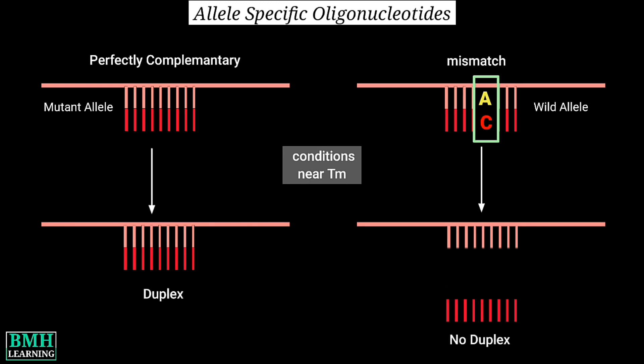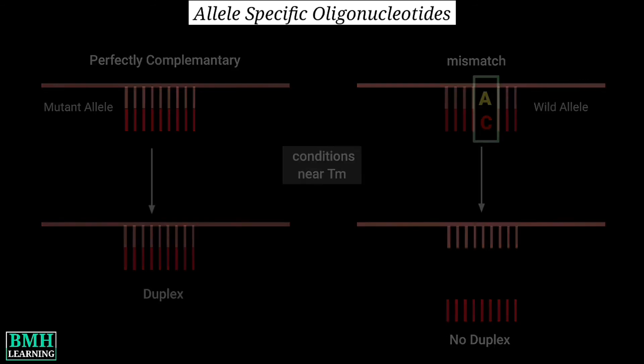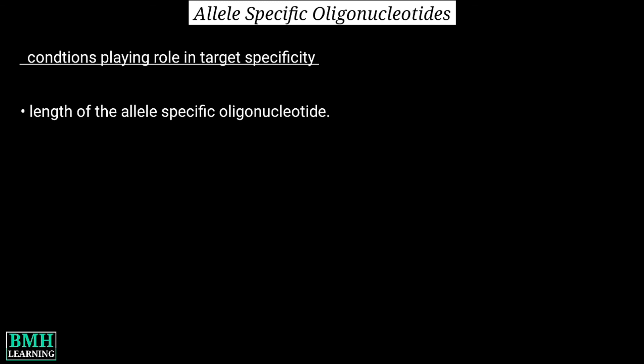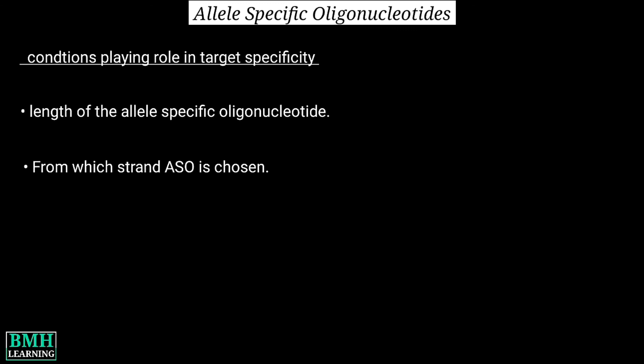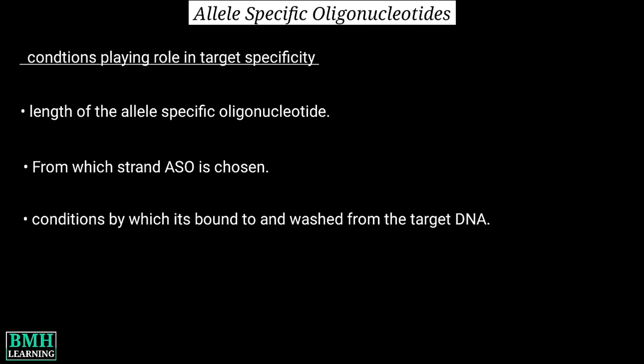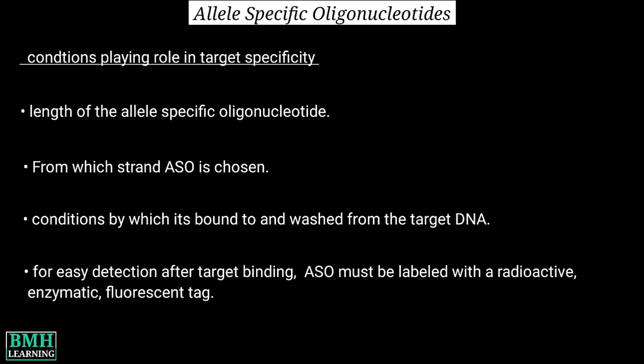The ASO is then visualized — for example, radioactive ASOs can be detected by exposing an x-ray film to the blot. There are other important conditions that play a great role in target specificity: these are the length of the allele specific oligonucleotide, from which strand the ASO is chosen, and the conditions by which it binds to and dissociates from the target DNA. To be easily detected after binding to its target, the ASO must be labeled with a radioactive, enzymatic, or fluorescent tag.